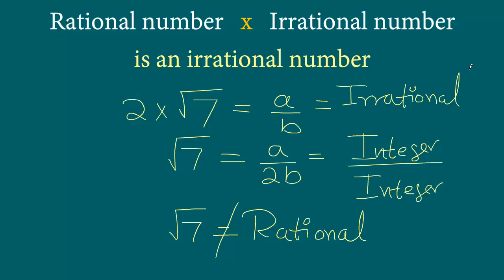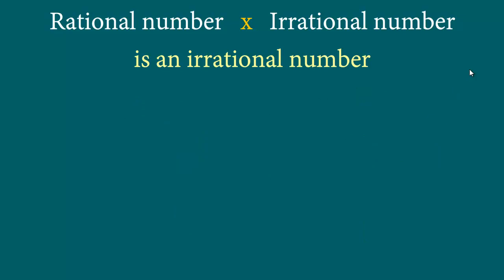So this is how we solve these types of questions. Let's quickly take a look at one other question. We want to prove that 2/5 times square root 11 is an irrational number. We are going to assume this is a rational number that can be written in the form a by b, where a and b are co-prime and b not equal to 0.